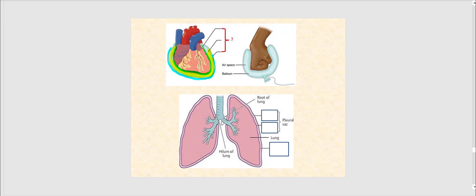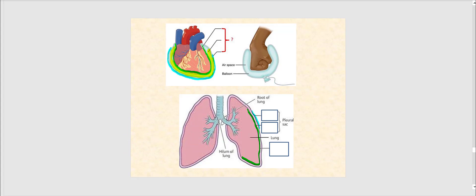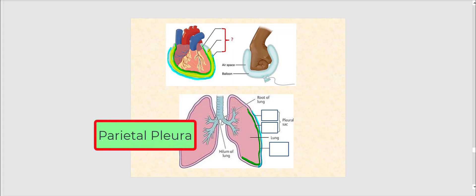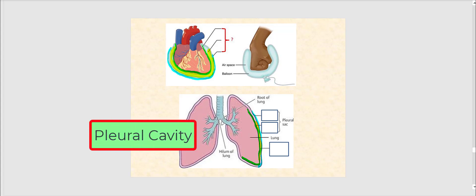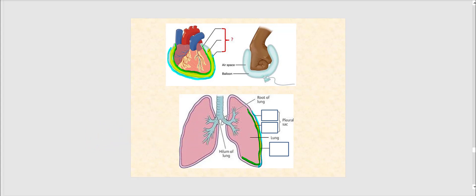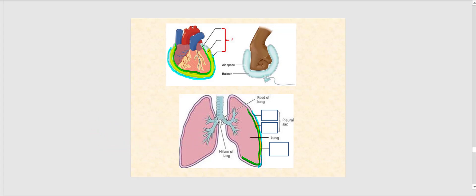For the lungs in the same activity: the structure highlighted in green on the lung surface is the visceral pleura. The structure highlighted in blue is the parietal pleura. The area highlighted in yellow between them is the pleural cavity, filled with pleural fluid. Together, the green and blue structures form the pleura — the serous membrane that encloses the lung and forms the pleural cavity.